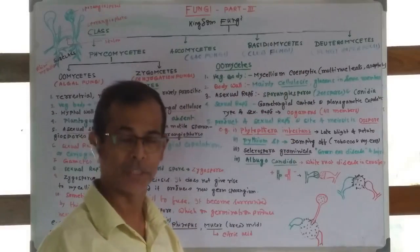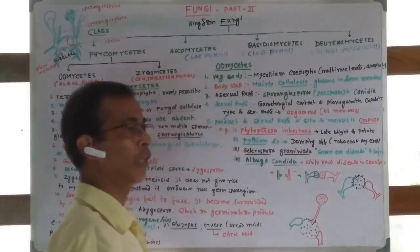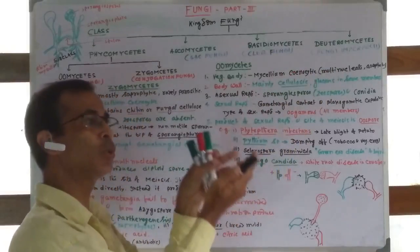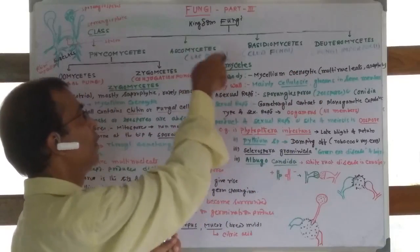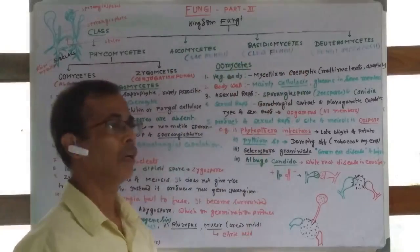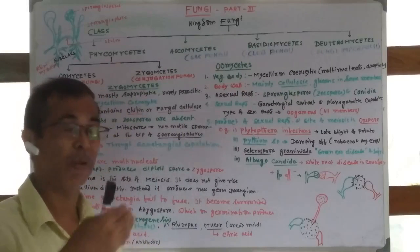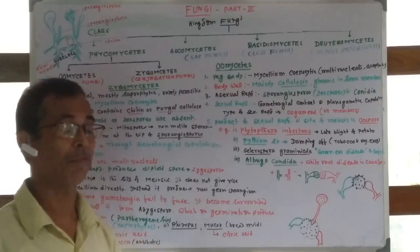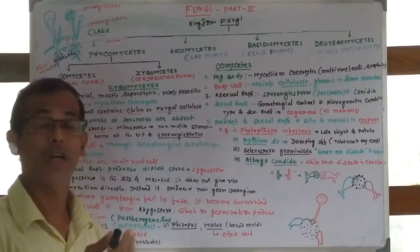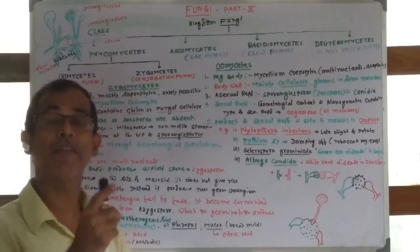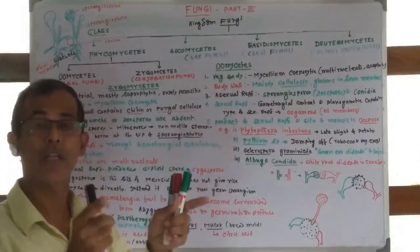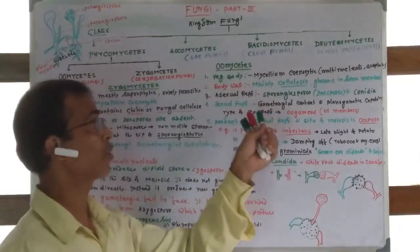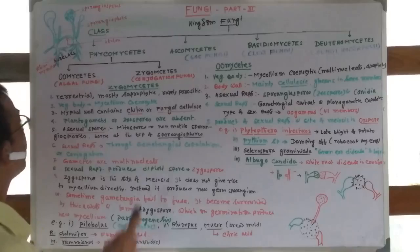Deuteromycetes are fungi imperfecti because they lack sexual reproduction, or their sexual stage has not been discovered. If the sexual stage is found, they are reclassified into other classes. For instance, Gibberella fujikuroi is the perfect stage of the deuteromycetes fungus Fusarium moniliforme.